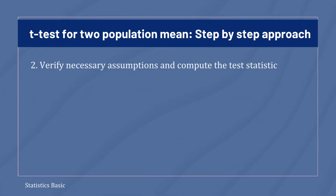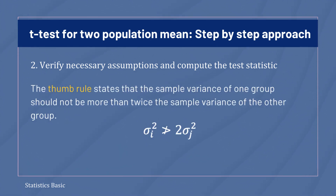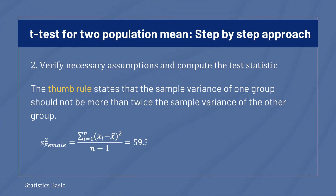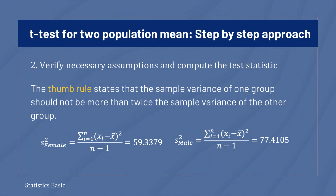Before performing the t-test, we need to test whether we can assume that the population variances of the two samples are equal. This can be done by using the thumb rule. The thumb rule states that the sample variance of one group should not be more than twice the sample variance of the other group. To test this assumption, calculate the sample variances of the two groups using the following formula. From the calculated sample variances, there is evidence that the sample variance of one group is not more than twice the sample variance of the other group. Hence, we can assume that the population variances of the two groups are equal.